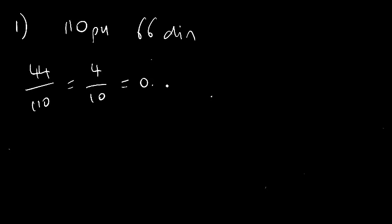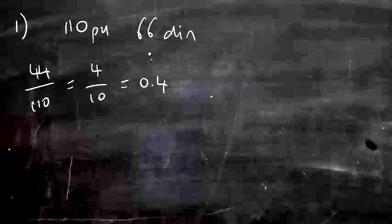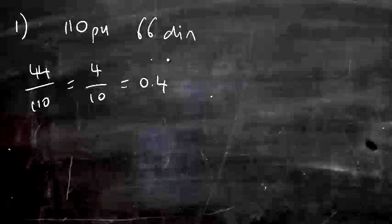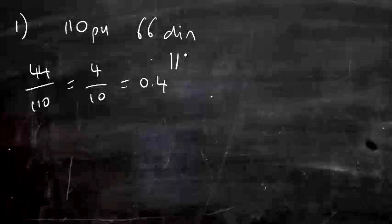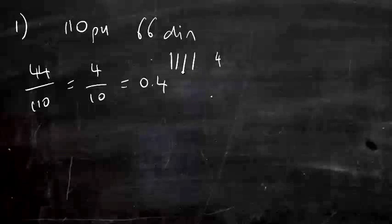In a year group of 110 pupils, 66 pupils have school dinners. What proportion of the year group do not have school dinners? Give your answer as a decimal. We need to work out the difference between 110 and 66. So we can count up, which is usually easier. 66, 76, 86, 96, 106, plus 4 more. The difference is 44 out of 110. Simplify and write the decimal.